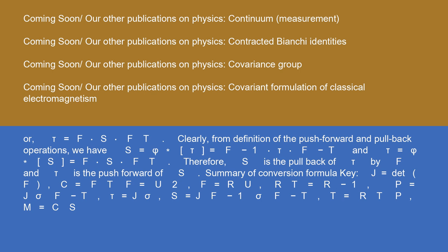Summary of conversion formulas. Key relations: J equals det(F); C equals F-transpose F equals U-squared; F equals R U; R-transpose equals R-inverse. P equals J sigma F-minus-transpose; tau equals J sigma; S equals J F-inverse sigma F-minus-transpose; T equals R-transpose P; M equals C S.